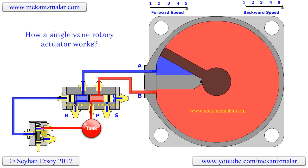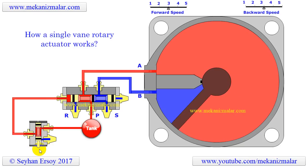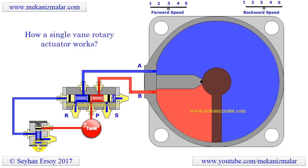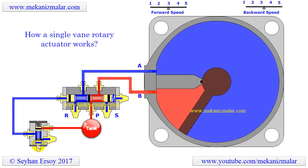While rotary actuators can be manufactured for both hydraulic and pneumatic applications, there are some differences in their behavior. The pneumatic rotary actuator moves from one end of the circular reciprocation to the other very rapidly, making it harder to control its position. It is also harder to hold the pneumatic rotary actuator at a certain angle due to the expansion ability of air.